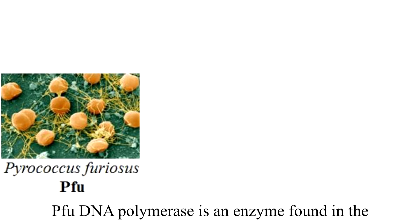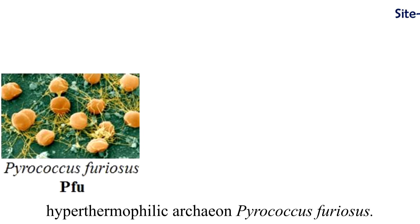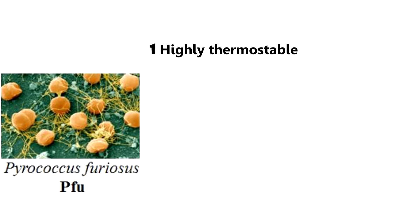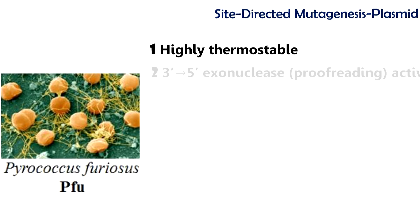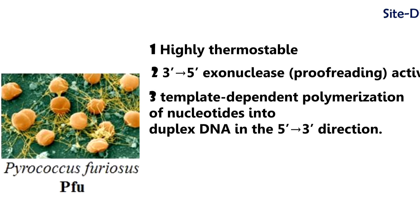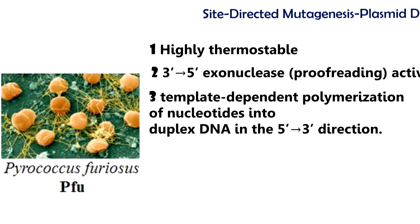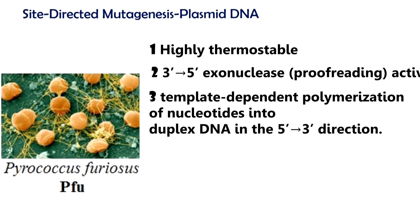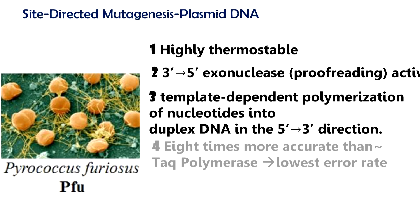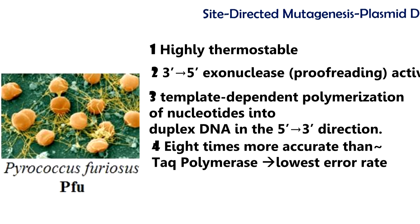Pfu DNA polymerase is an enzyme found in the hyperthermophilic archaeon Pyrococcus furiosus. Pfu DNA polymerase has superior thermostability and proofreading properties compared to Taq DNA polymerase. Unlike Taq DNA polymerase, Pfu DNA polymerase possesses 3' to 5' exonuclease proofreading activity, meaning that it works along the DNA from the 5' end to the 3' end and corrects nucleotide misincorporation errors. This means that Pfu DNA polymerase-generated PCR fragments will have fewer errors than Taq-generated PCR inserts.